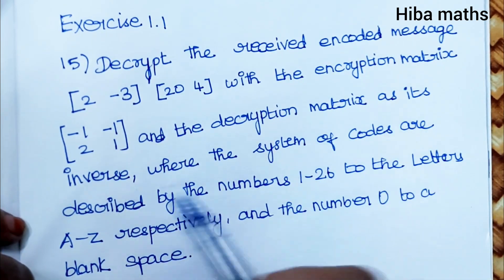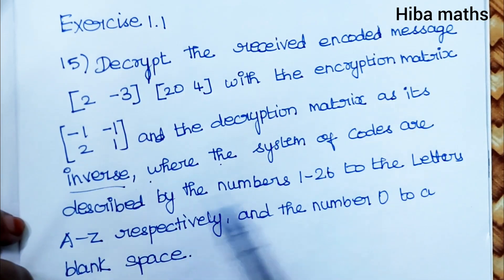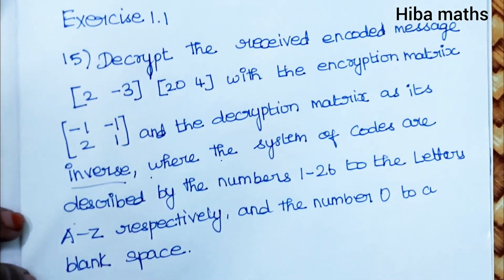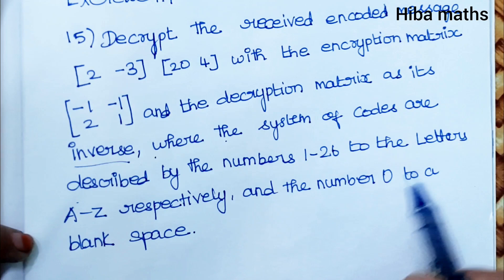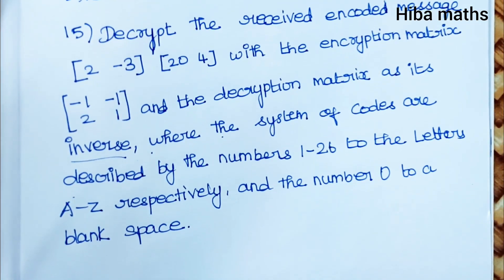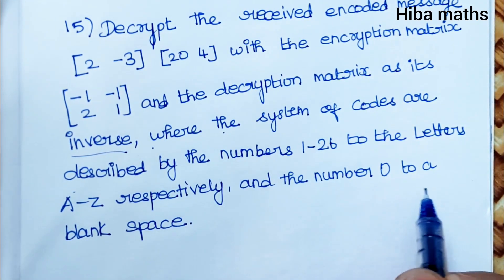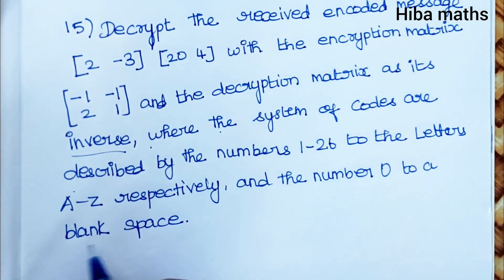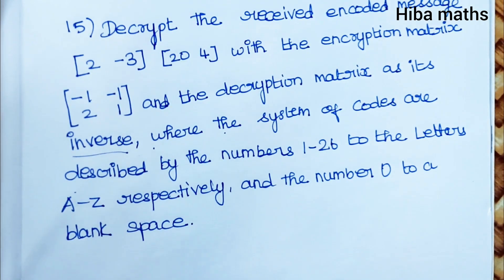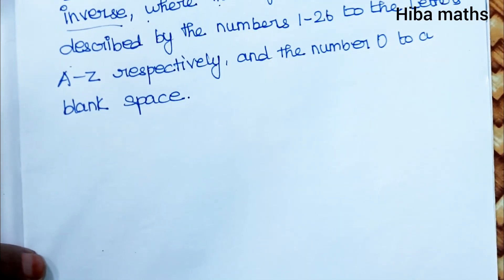The system of codes are described by the numbers 1 to 26 corresponding to the letters A to Z respectively - that is A=1, B=2, C=3, D=4, and so on - and the number 0 to a blank space.